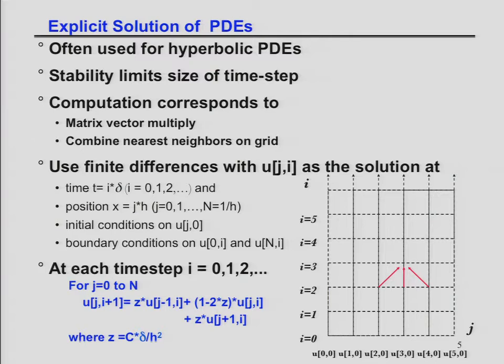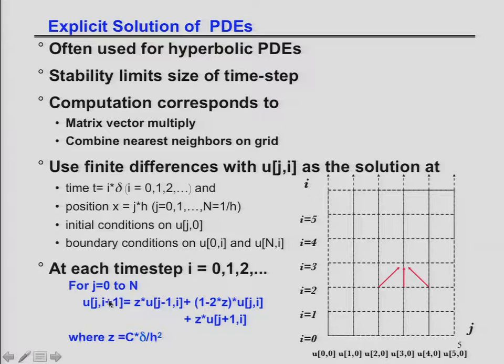I equals 0 is my initial time, then 1, 2, 3, multiplied by some time step. I have initial conditions at time 0 and boundary conditions on the sides when J equals 0 and J equals 5. At every time step, as the wave bounces from one side to the other, I take the solution at time I and position J, the solution at my left and right neighbors at the same time, compute some sort of average, and get the answer one time step later.